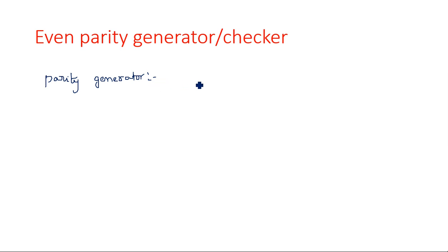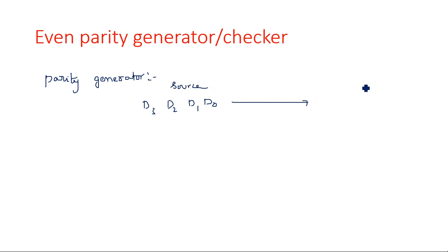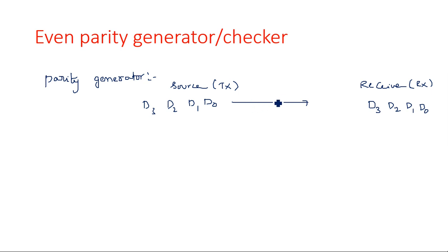Suppose I have data bits like d0, d1, d2, d3 — let us consider a 4-bit data format d3 d2 d1 d0. When this information is being transmitted to another point, this is the source and this is the receiver. The source is nothing but a transmitter, and this is the receiver. When the receiver is receiving the same data d3 d2 d1 d0, the medium between the transmitter and receiver may be a wired medium or a wireless medium.